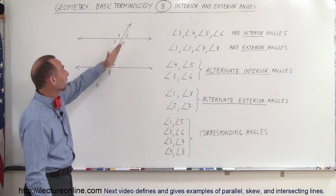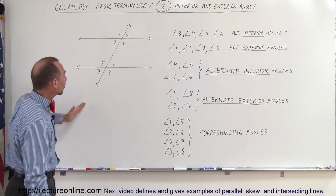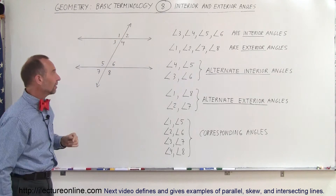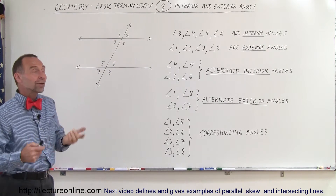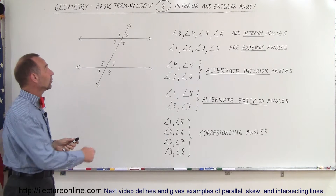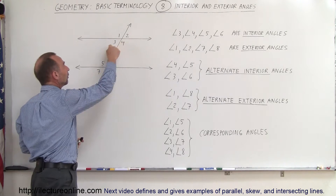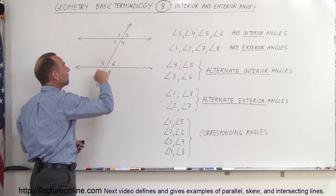And then we have another line that intersects both horizontal lines, and so that creates eight angles: angle 1, 2, 3, 4, 5, 6, 7, 8.